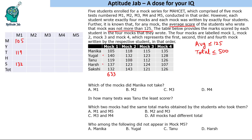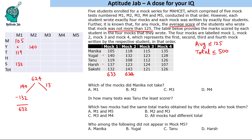For Mock 2, the total is 58 + 66 + ... = 624. We consider two cases. Case 1: if Yugal does not write this test, 140 is added and 132 is excluded, giving 624 − 132 + 140 = 632. Case 2: if Harsh does not write this test, 137 comes in and 123 is excluded, giving 638. So the true total will be either 632 or 638.